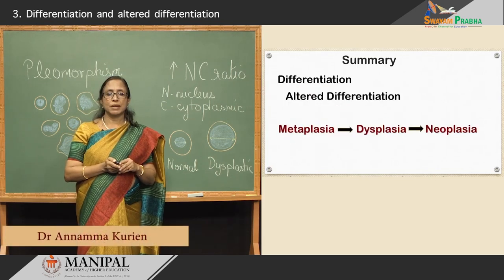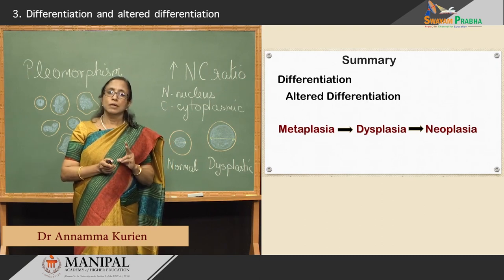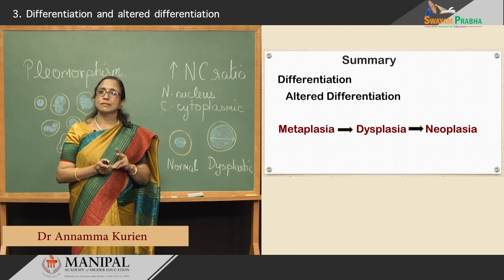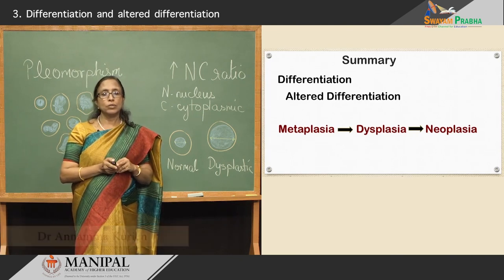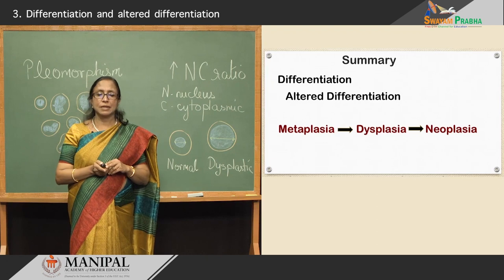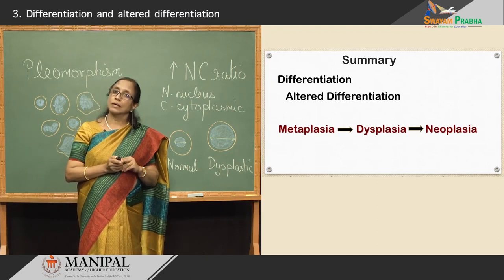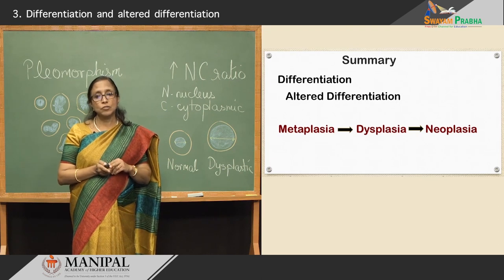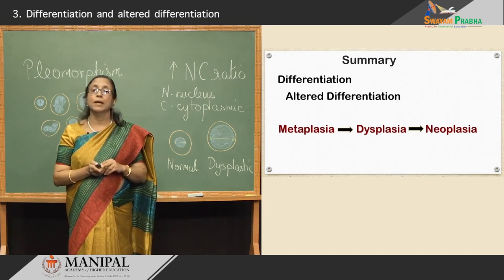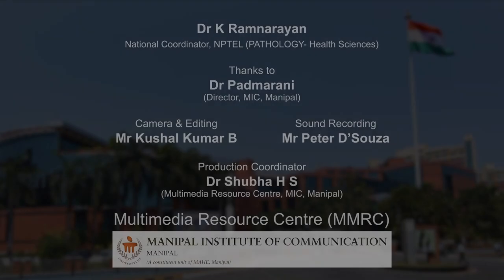To summarize, we looked at various aspects of differentiation. We looked at metaplasia and dysplasia as disorders of altered differentiation, and we looked at each one in detail — the features, the examples, the causes, the clinical applications — and lastly, how dysplasia can become an irreversible neoplasia. Thank you.